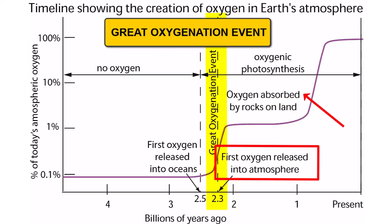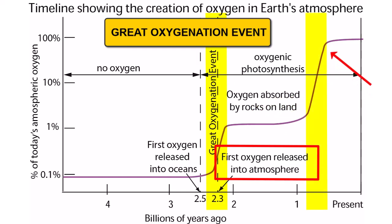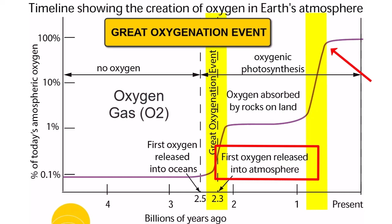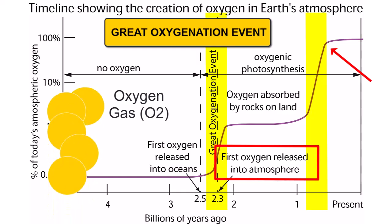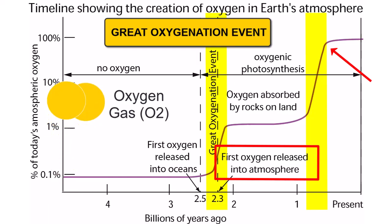It was over 1 billion years later before another large oxygen increase event brought oxygen levels up to today's levels. It took that long for the oxygen to complete its chemical reactions with other atmospheric gases and dissolved metals on Earth's surface. After that work was done, oxygen gas could begin to accumulate in amounts necessary to support more advanced life.